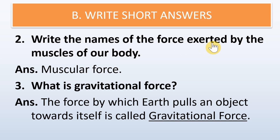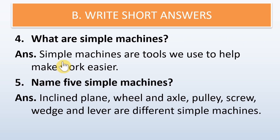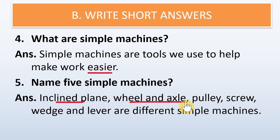Write the names of the force exerted by the muscles of our body — the answer is muscular force. What is gravitational force? The force by which the earth pulls an object towards itself is called gravitational force. What are simple machines? Simple machines are tools we use to help make work easier.